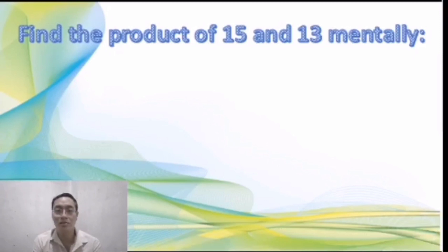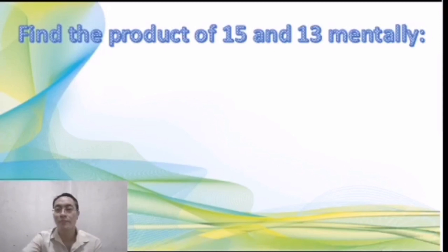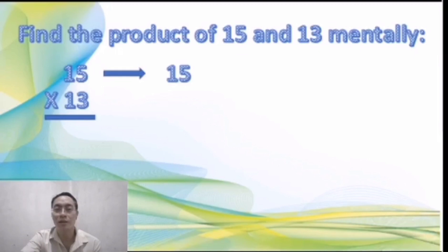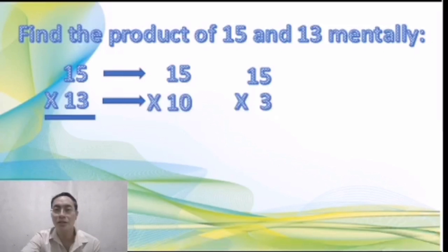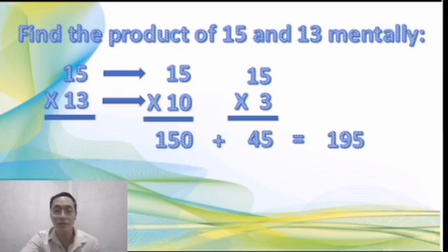I can see many correct answers in the chat box. Let's see: 15 times 13. Multiply 15 two times by the breakdown of 13, which is 10 and 3. Multiply 15 times 10 to get 150, and 15 times 3 to get 45. Add the two partial products: 150 plus 45 gives you 195. Very good to everyone who got it right!